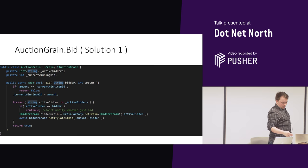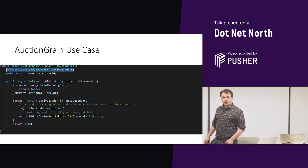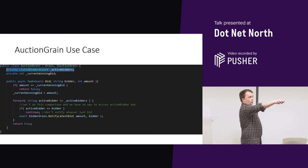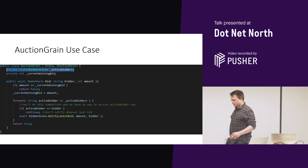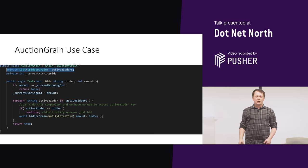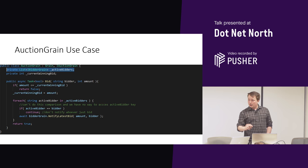What if we change the use case? Instead of a list of strings and keys where we go and fetch the grains, we have a list of grain references — a list of IBidderGrains. We come down and say: is the string bidder that just came in the same as this active bidder? You can't do that comparison — all you have is a grain reference. Your grain reference does not tell you what its key is. You can't make a call to that actor because you still have the same mailbox-locking problem.